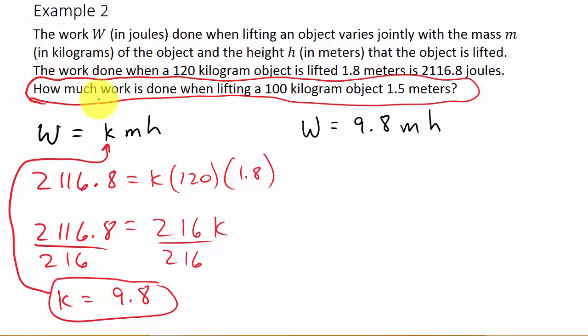they're asking us to find how much work is done when lifting a 100 kilogram object 1.5 meters. Okay, so I'm going to have to take the 100, plug that in for m, and the 1.5, and plug that in for h. So w is 9.8 times m, which is 100, times 1.5, which is h.